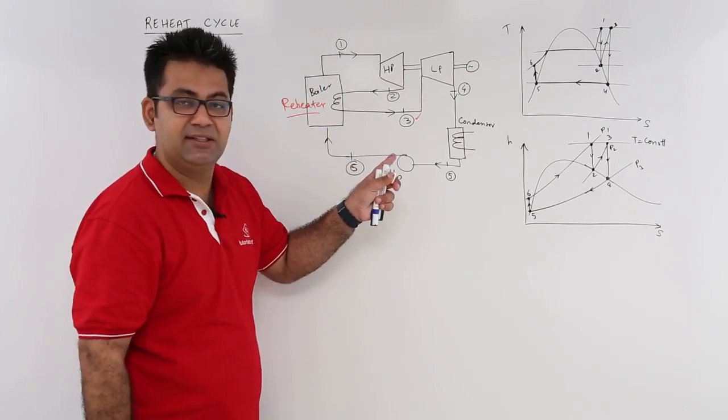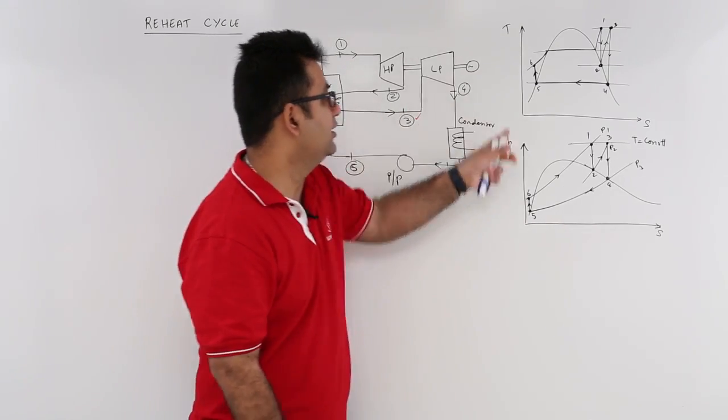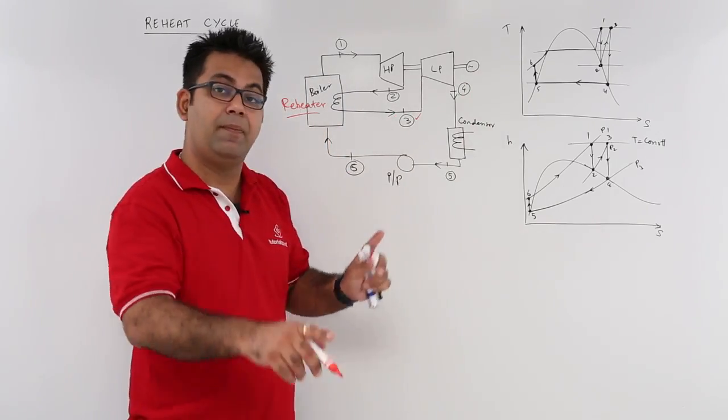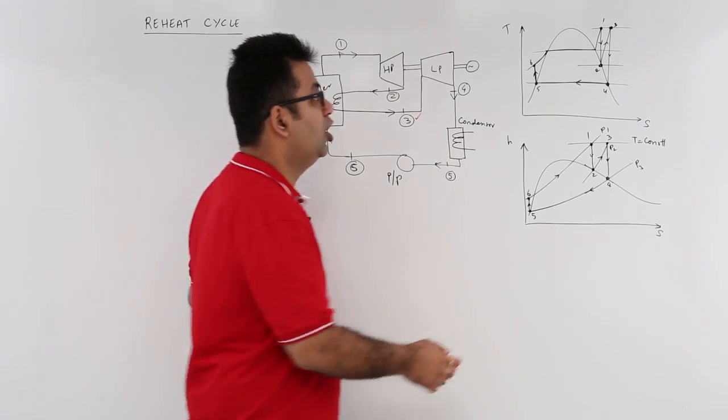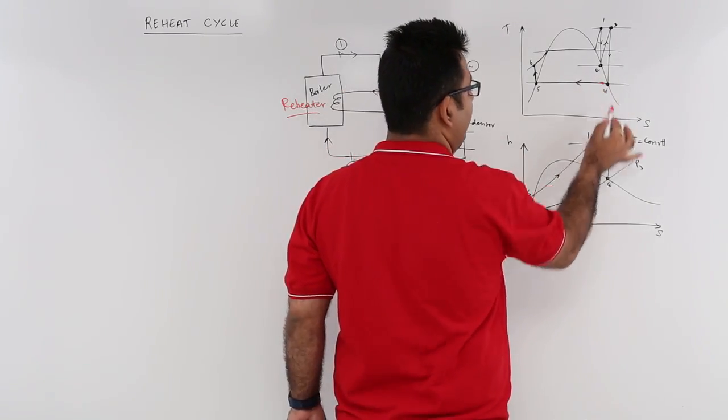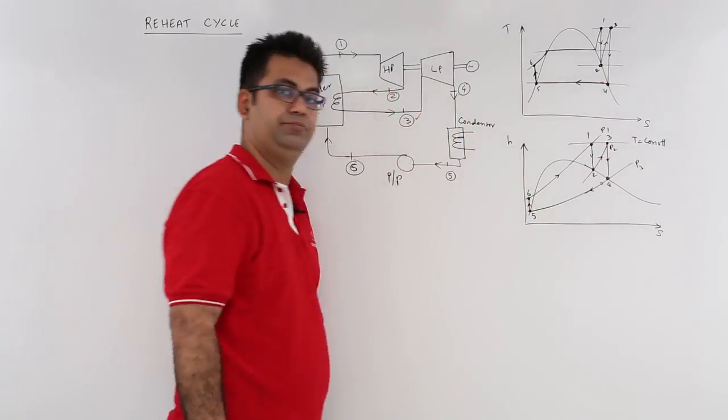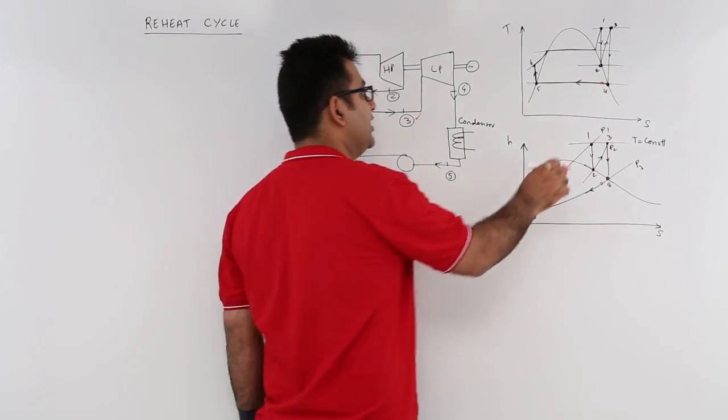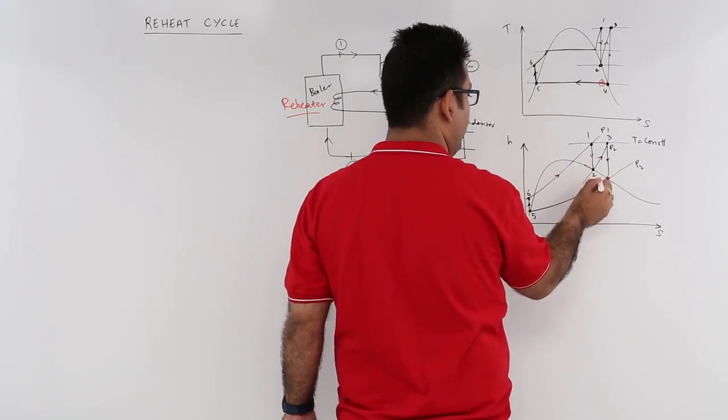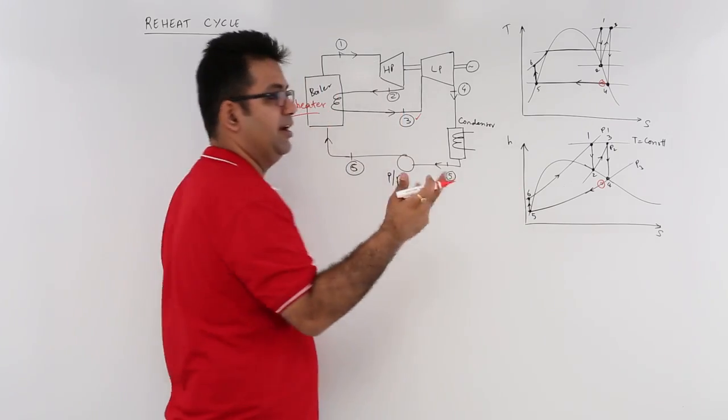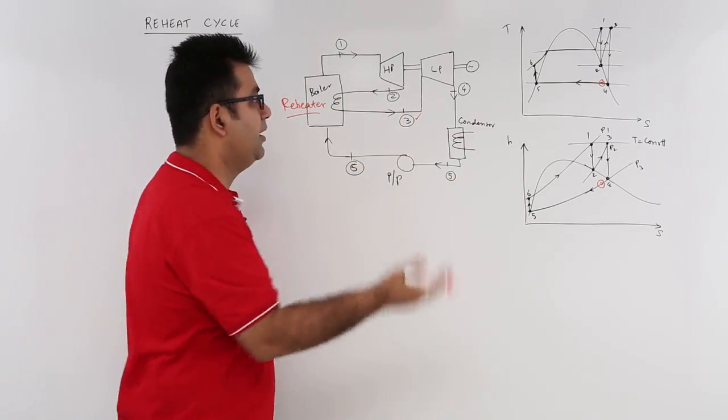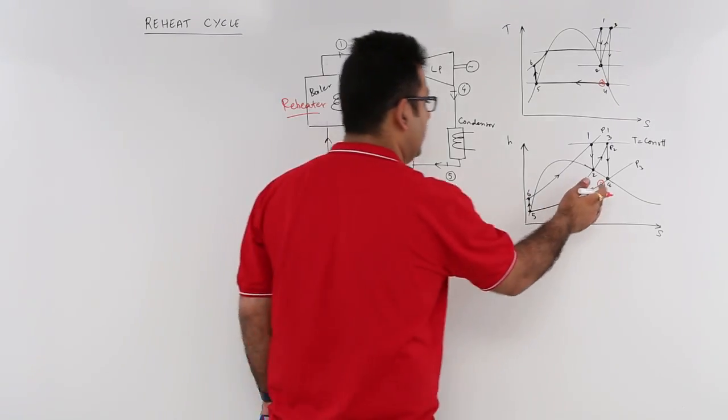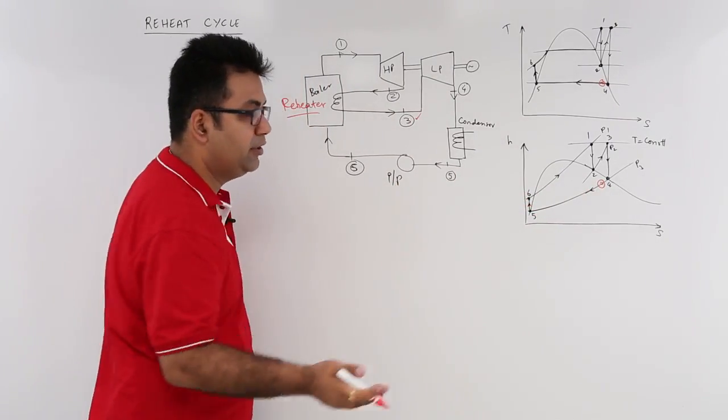This is evident on the T-S and exit plot. If you remember the Rankine cycle, after expansion your state was lying somewhere in the wet region. This is not the case in the reheat cycle. We have avoided it—the exit of the turbine is falling at state 4 on the saturated vapor line, meaning no moisture at all, 100% vapor.